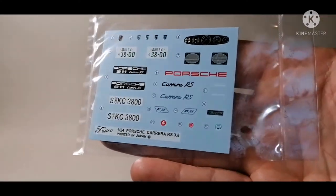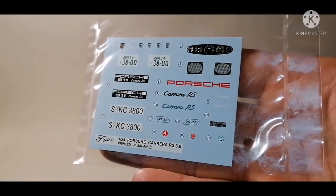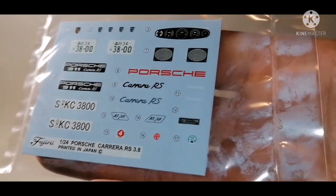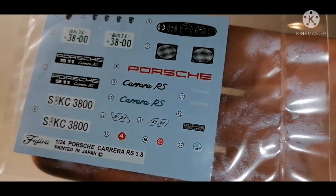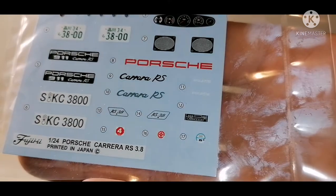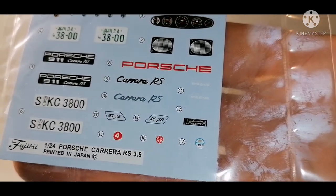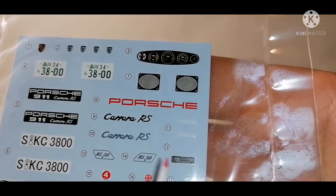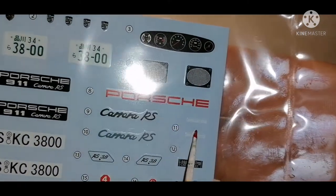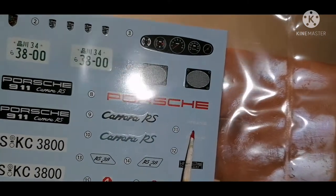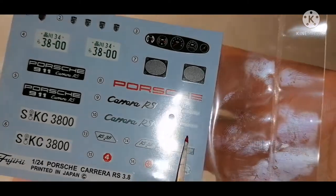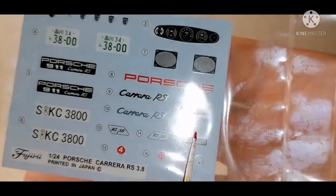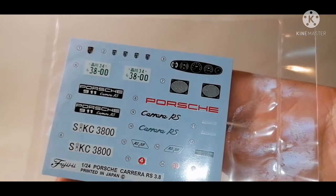First up, the decal sheets. There's actually two, one on the back side as well. They look fairly decent quality with the dials at the top, badges, varying number plates, window stickers. Can't quite make out what that says though, I might have to take a picture and zoom in.